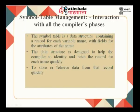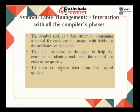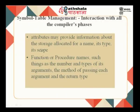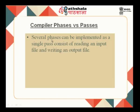The symbol table is a hash table-like data structure containing a record for each variable name with fields for the attributes of the name. The data structure is designed to help the compiler identify and fetch the record for each name very quickly, and to store or retrieve data from the record very quickly. It interacts with all the compiler's phases. The attributes may provide information about storage allocated for a name, its type, its scope, and for function or procedure names, the number and types of arguments, the method of passing each argument, and the return type.